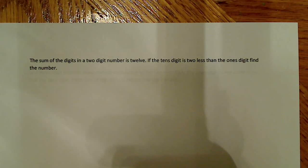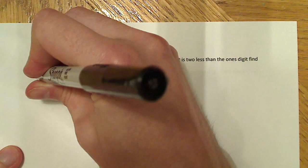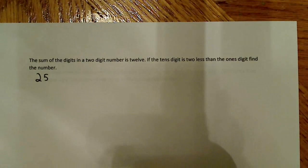So the first problem says, the sum of the digits in a two digit number is 12. If the tens digit is two less than the ones digit, find the number. Okay, well, the first thing that I want to talk about briefly is what this means. Okay, so let's say I have a number, I don't know, 25 is a good example, right?